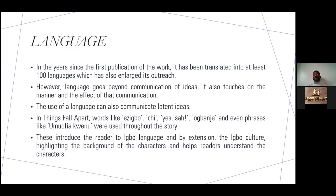People who originally didn't speak Igbo language came to know about words like Chi and Ogbanje — words they ordinarily wouldn't have met in their everyday communication. But reading the text, they came to see these words as part of the language of the Igbo people at the time Things Fall Apart was written. This also highlights the background and the setting of the characters, helping readers to put themselves in the mindset or perspective of the characters whose stories they are reading. So language in a literary work first communicates the ideas literally, and secondly communicates in such a way that it gives some context to the literary work being read.